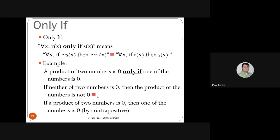'Only if': for all X, R(X) only if S(X) means 'for all X, ¬S(X)→¬R(X),' which by contrapositive is 'for all X, R(X)→S(X).' So R only if S means R implies S. Example: 'a product of two numbers is 0 only if one of the numbers is 0' is equivalent to 'if neither number is 0 then the product is not 0,' which by contrapositive gives 'if the product is 0 then one of the numbers must be 0.'